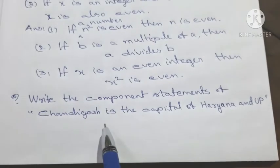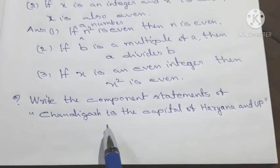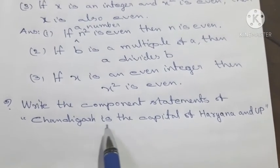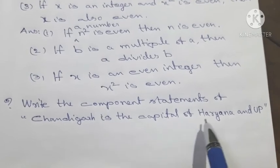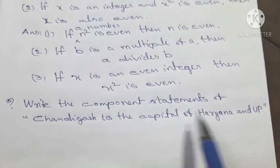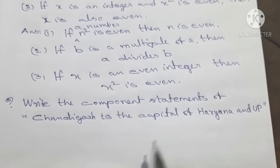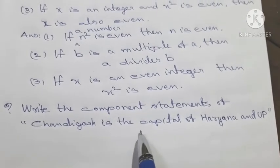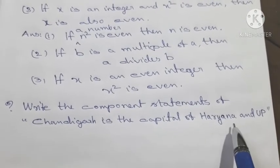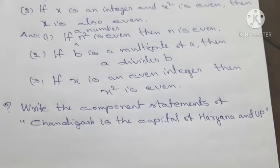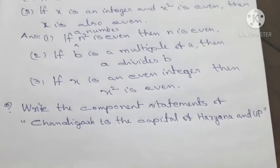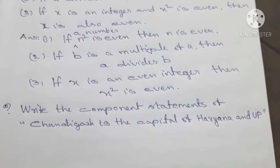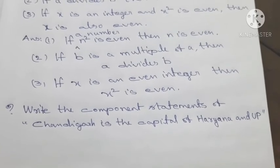Write the component statements of: 'Chandigarh is the capital of Haryana and UP.' This is a compound statement. Its component statements are: Chandigarh is the capital of Haryana, and Chandigarh is the capital of UP.